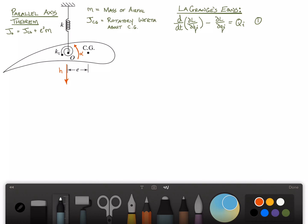The airfoil is attached to a rigid surface by a spring of constant k, a linear spring, and then a torsional spring of constant k sub t. In addition, I've gone ahead and written the parallel axis theorem. m is the mass of the airfoil, and j sub cg is the rotatory inertia of the airfoil about its center of gravity. And then finally, I've written Lagrange's equations.